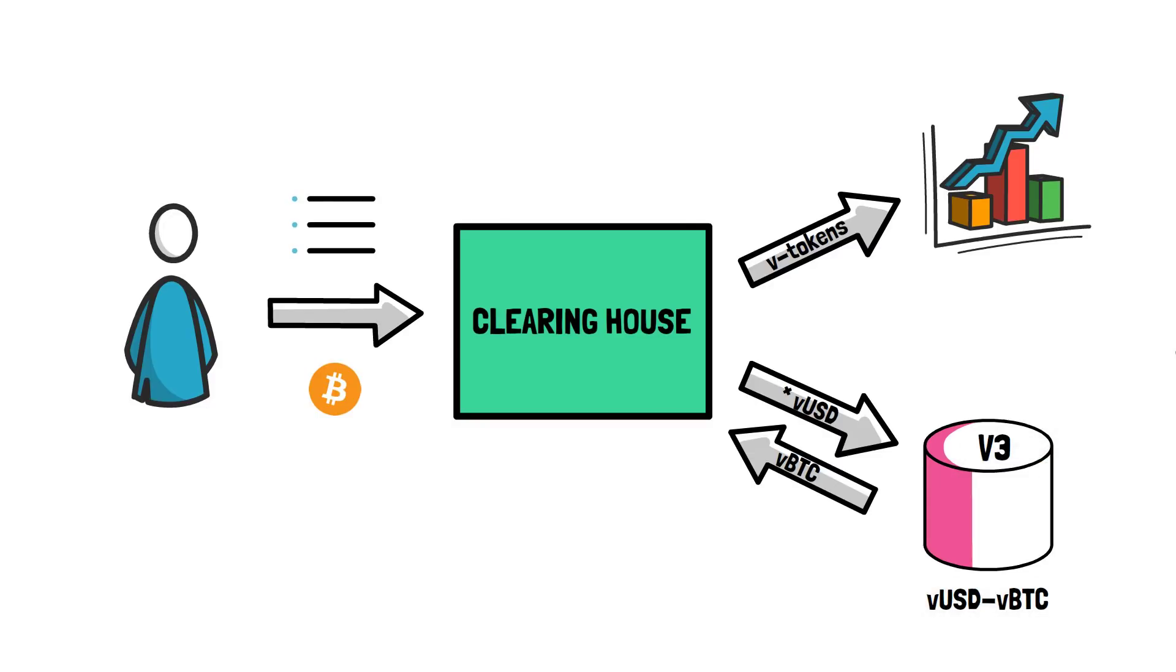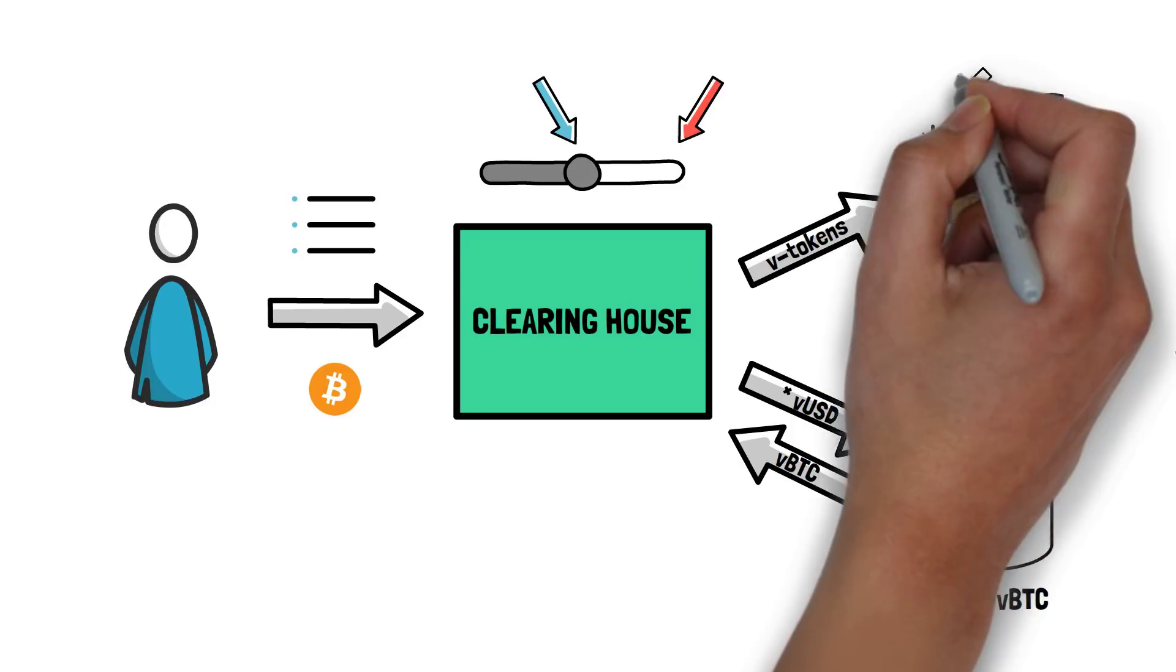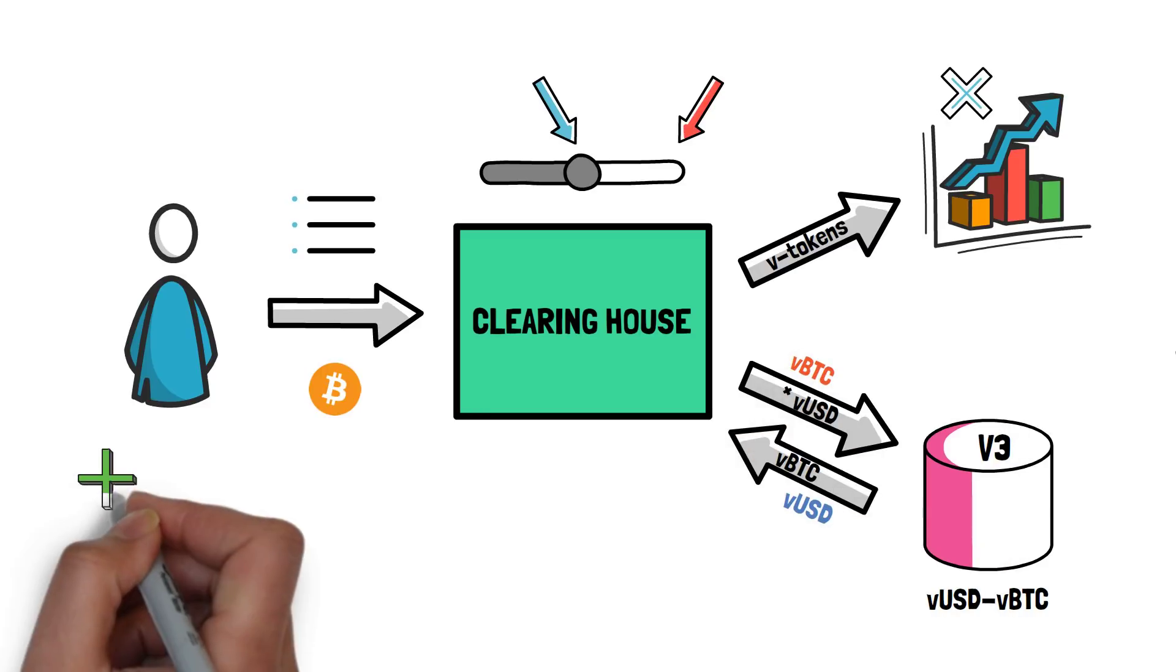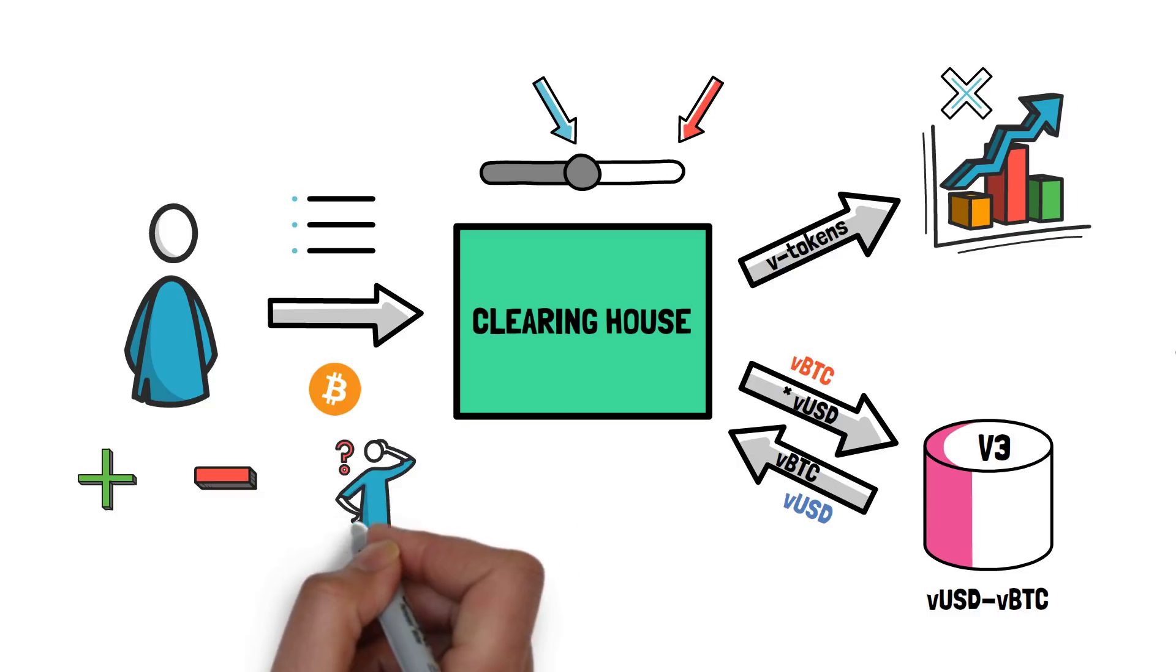As mentioned earlier, depending on the leverage ratio that the user selects, they can be using either some or all of their VUSDC tokens. Whenever the user decides to close their BTC position, they can trade their VBTC tokens back to VUSD, securing their profit or loss, depending on what happened to the Bitcoin price since they opened the position.